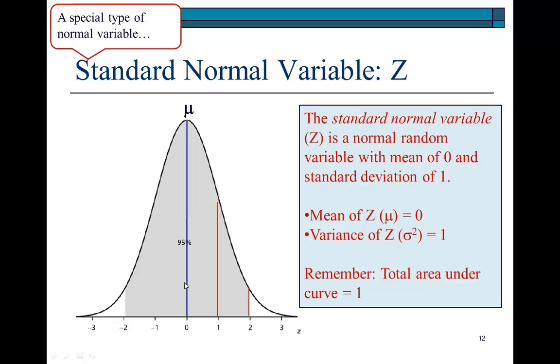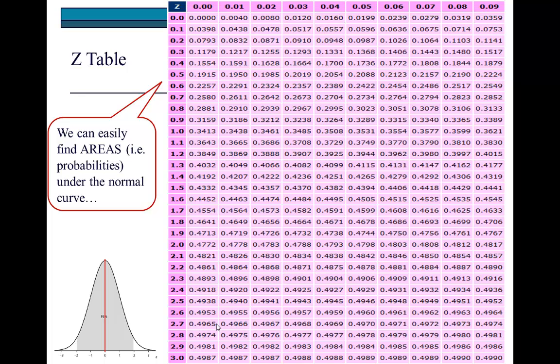Now though, it is important also to understand that if a variable is standard normal, it will be very easy for us to find probabilities for any values that Z may have. Because, in fact, if Z is equal to 1, then this area right here that corresponds to a Z value of 1, we can find that quite so easily by going to the front or the back of any standard statistics book where you see the Z table. And this is the Z table right here.